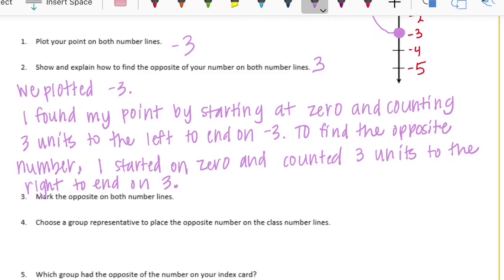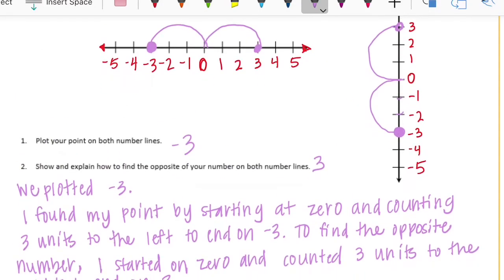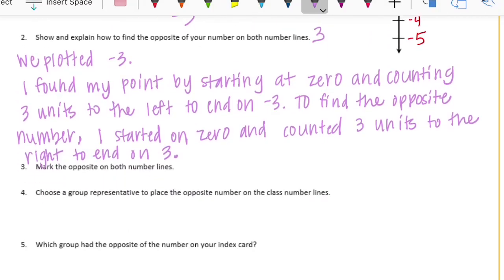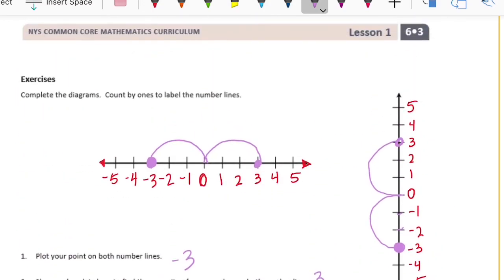So number 3 says mark the opposite on both number lines. We already did that. We marked negative 3 and 3. Number 4, choose a group representative to place the opposite number on your class number line. That would be something we would only do if we were doing it in class. And same with number 5, which group had the opposite of the number on your index card. So maybe if you were in class and you had number 3, you'd be looking for someone who had negative 3. If you had 5, you'd be looking for someone with negative 5. If you had negative 4, you'd be looking for someone with 4.